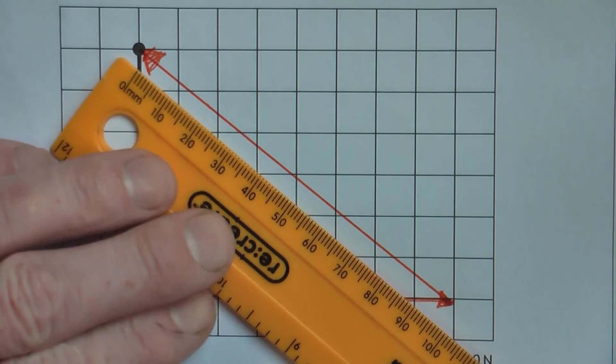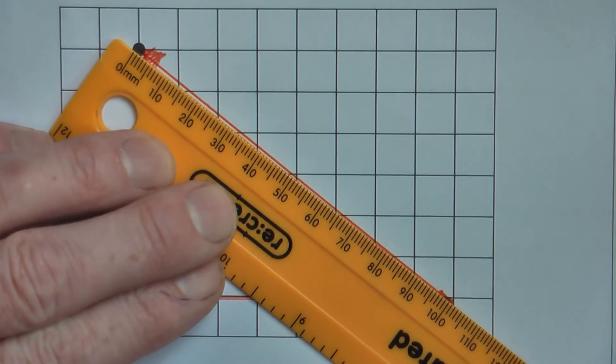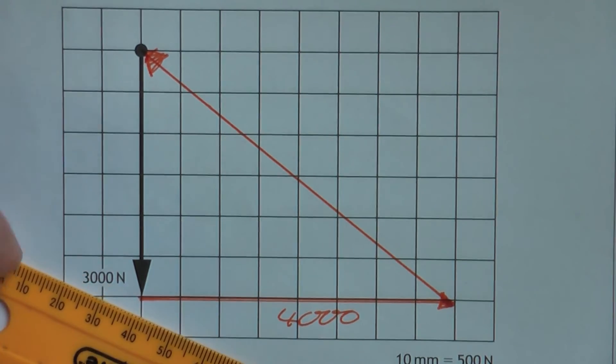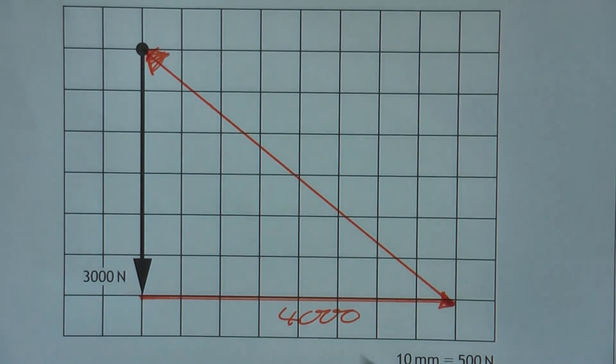Or, you can measure it. So this measures out at 100 millimetres. So to that scale, it would be 5,000 newtons.